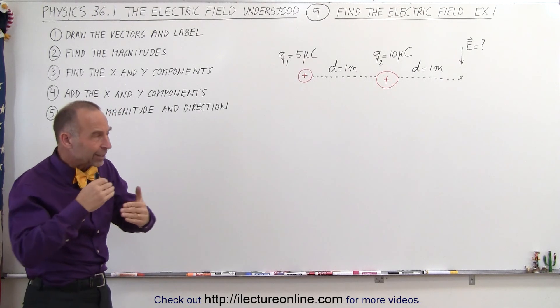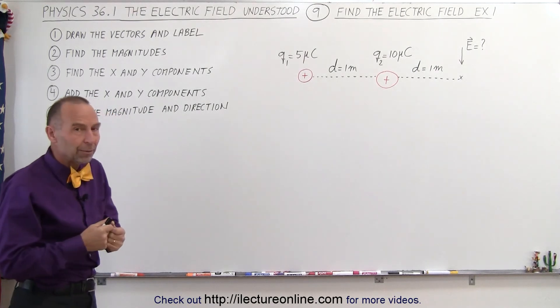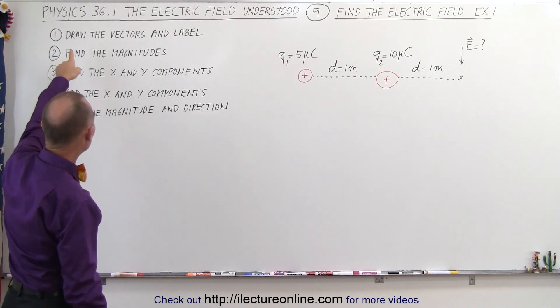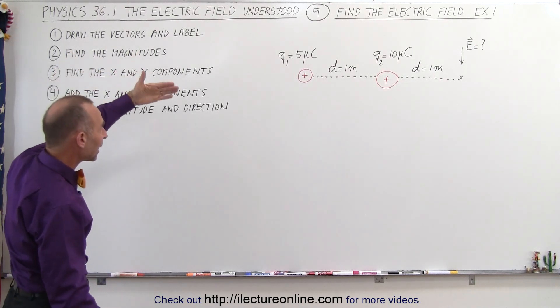There are some particular ways in which we can do this problem, but I think if you follow these steps it makes it the easiest. The first step says to draw the vectors and then label the vectors.